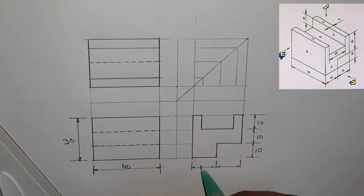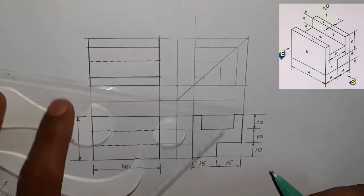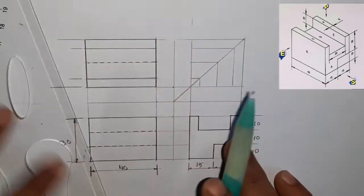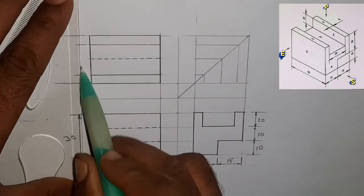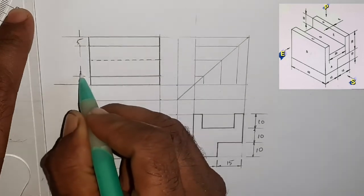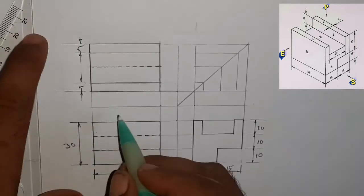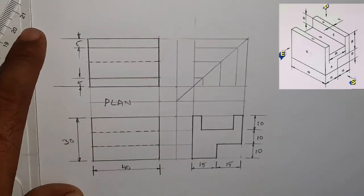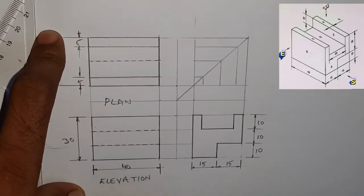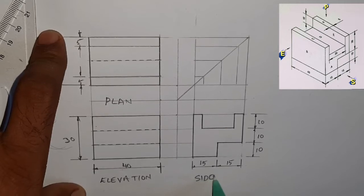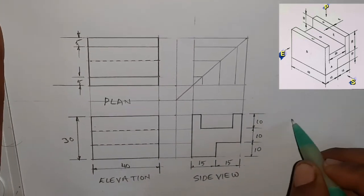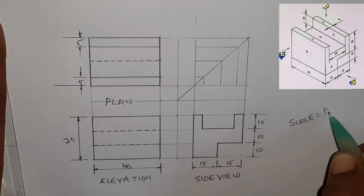The height of the image is 50mm. In the plan, we will show you how to make a new one. The edges are 5mm. We have made the diamonds in this 5mm. We will complete the views — the elevation and side view. We will complete the scale.